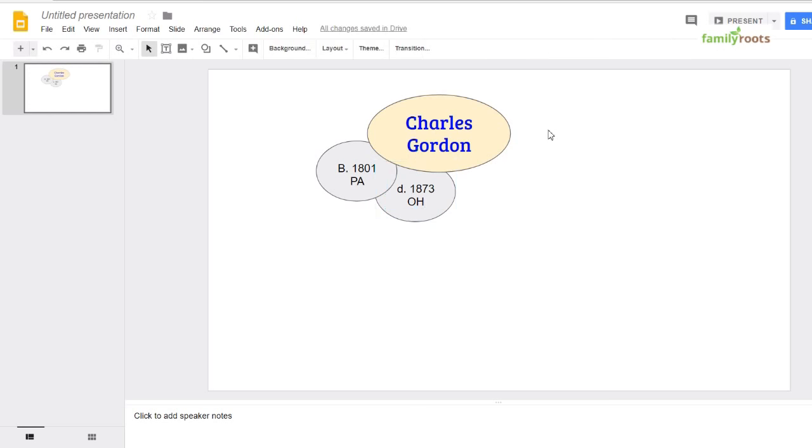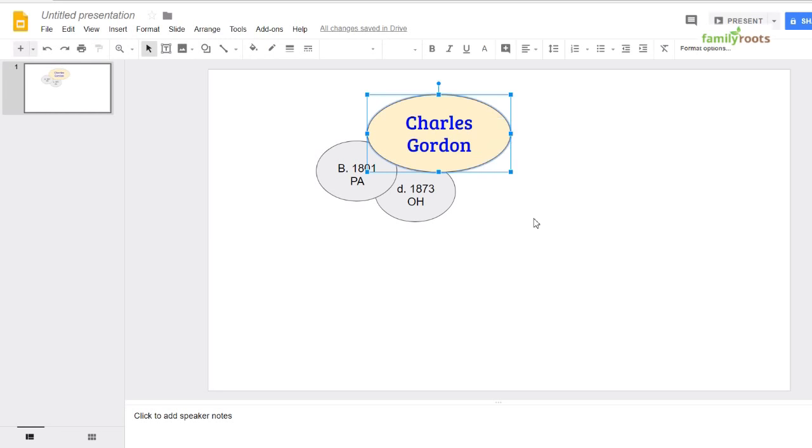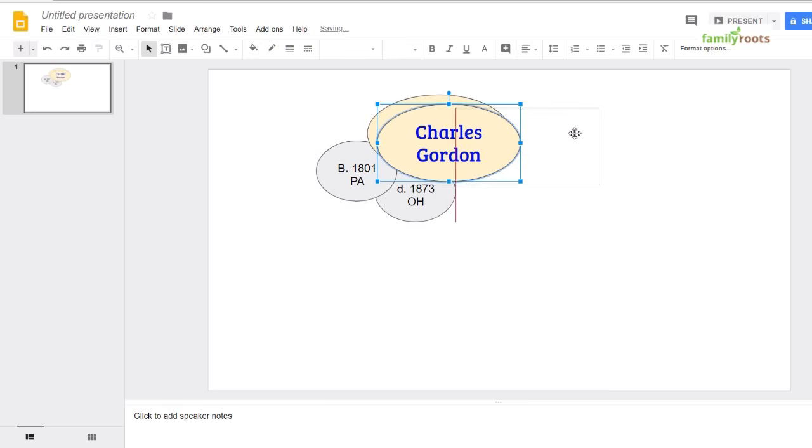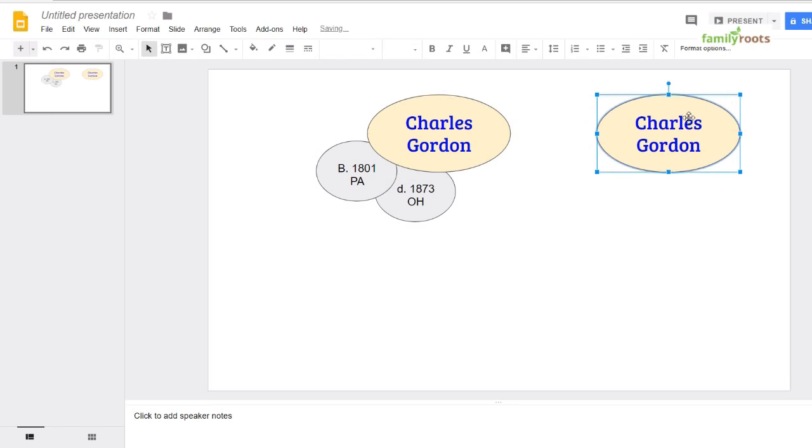So let's say Charles gets married. We can right click copy, right click paste, and now I have Charles over here. And then I can just change the name to Jane Fickel, and now I have a bubble.